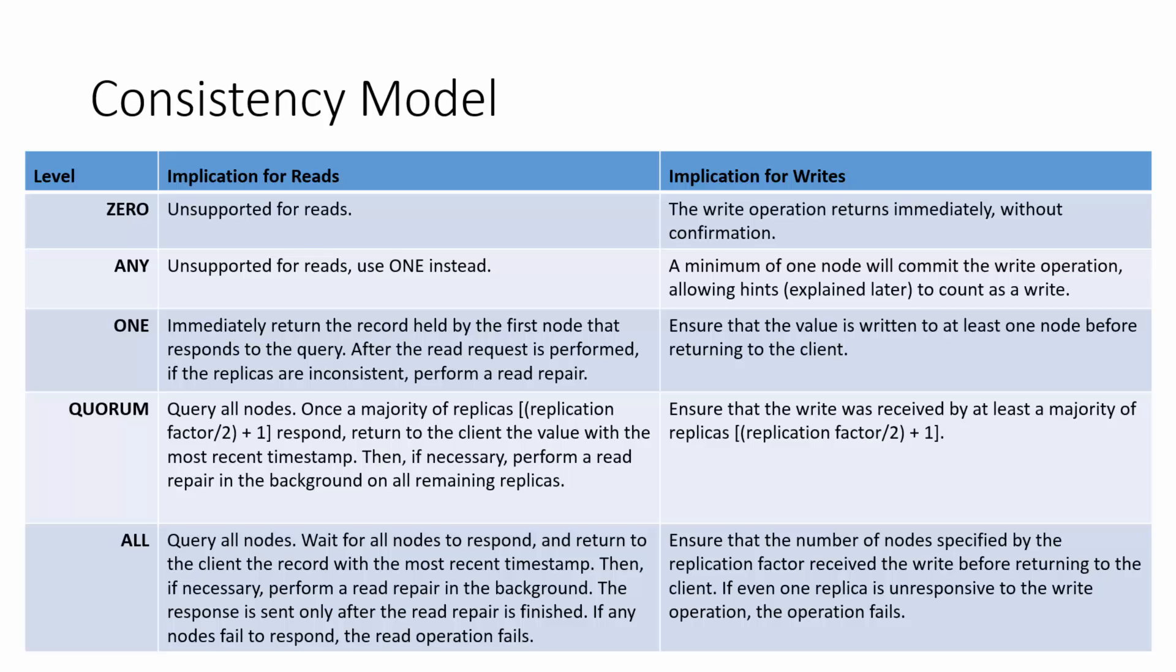In the QUORUM model, all nodes are queried, and once a majority of replicas—that is, replication factor divided by 2 plus 1—respond, you can return to the client the value with the most recent timestamp if required. If the replicas have diverged at that point, you can perform a read repair. In QUORUM writes, it ensures that the write was received and confirmed by at least a majority of the replicas, replication factor divided by 2 plus 1.